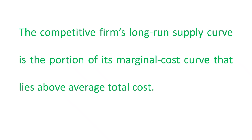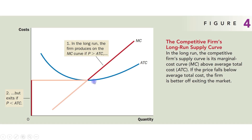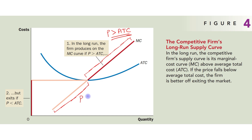The competitive firm's long-run supply curve is the portion of its MC curve that lies above ATC. In that portion, price is able to cover the average total cost of production. In the portion where price is less than ATC, the firm will not produce and will exit the market.